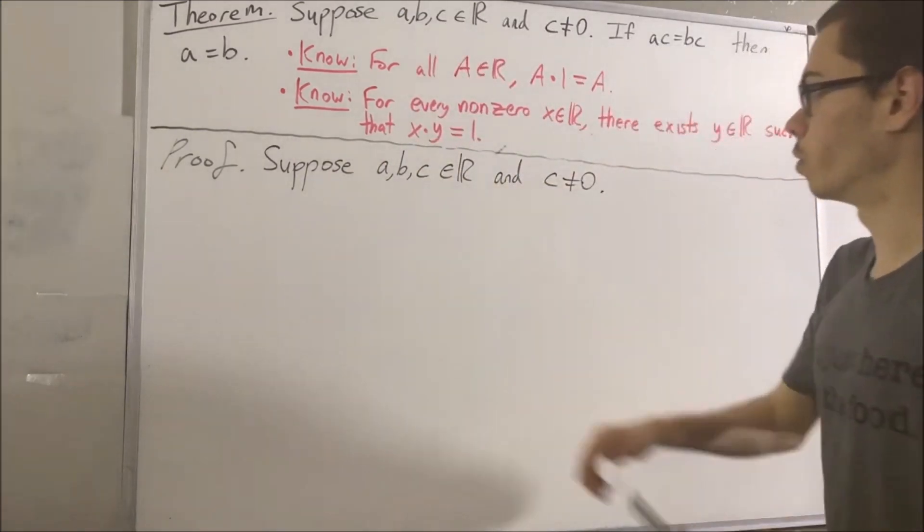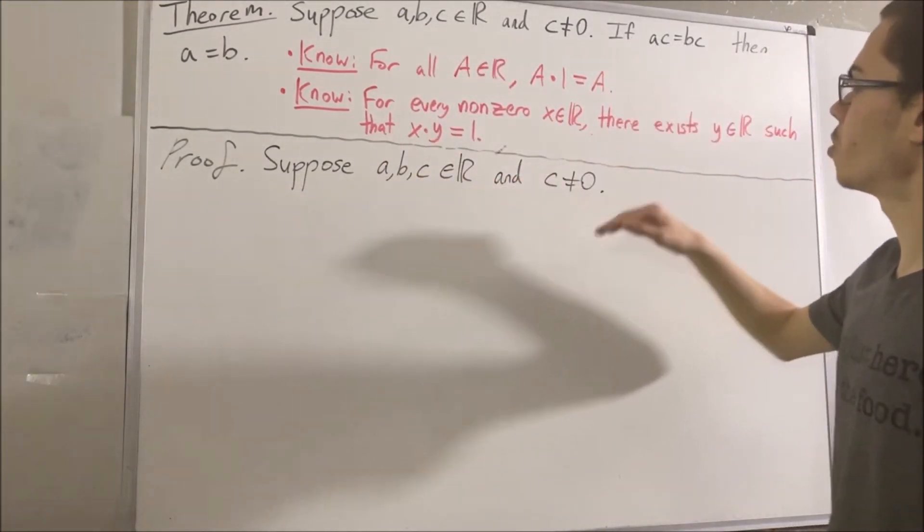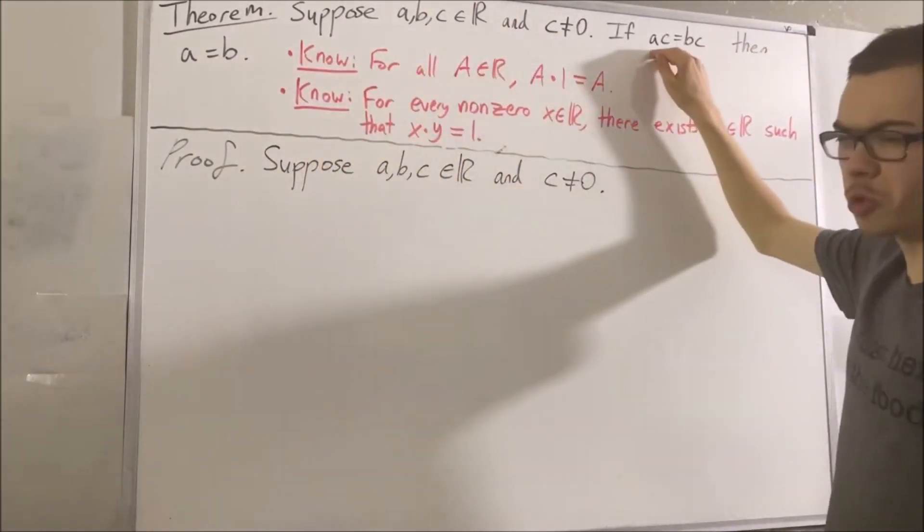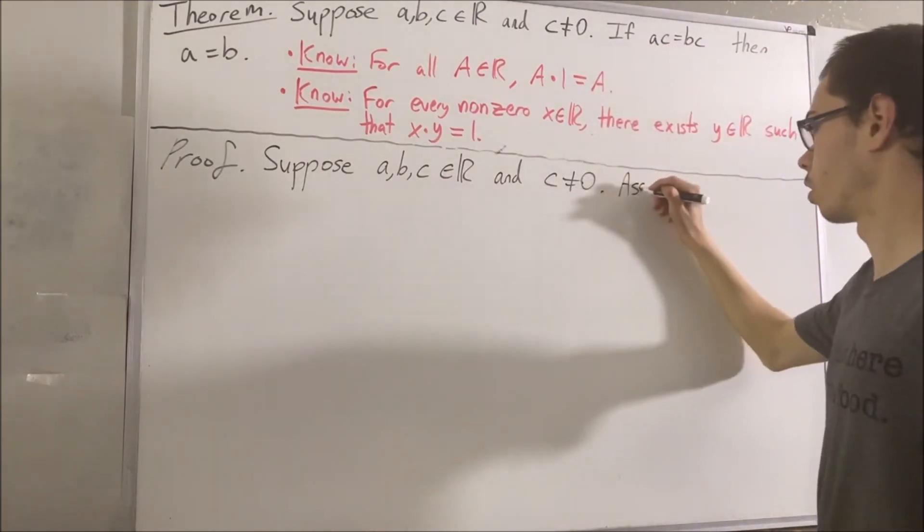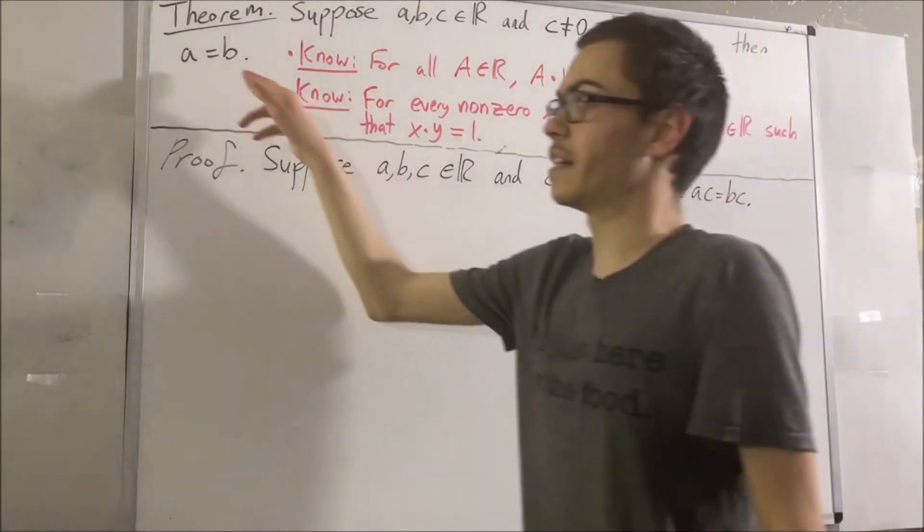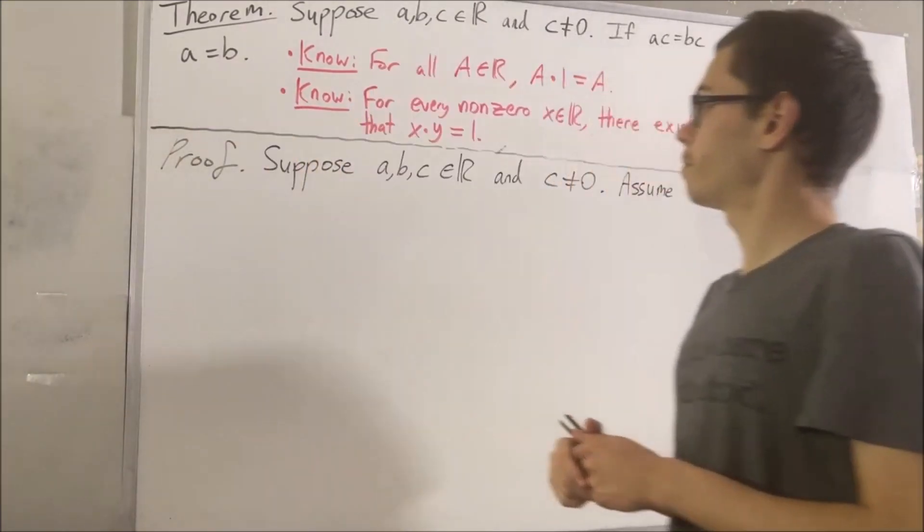Our goal with these three real numbers is to show if this is true, then this is true. So, let's assume that this is true. Now, our goal from here is to deduce that this is true.